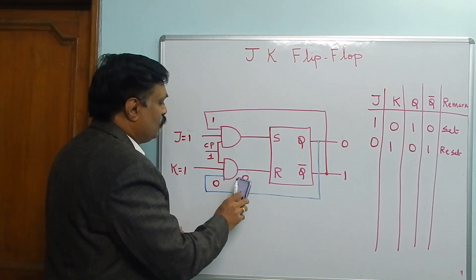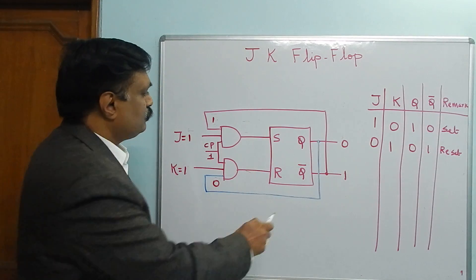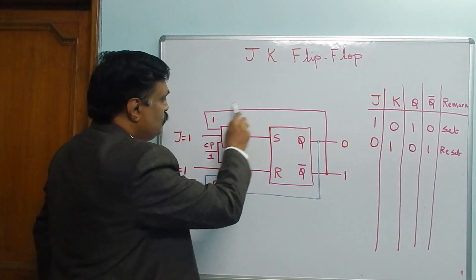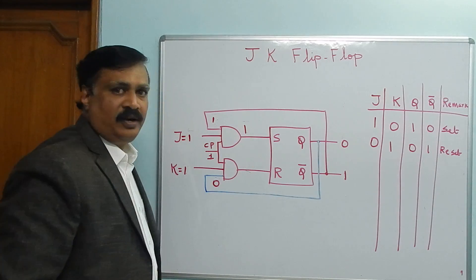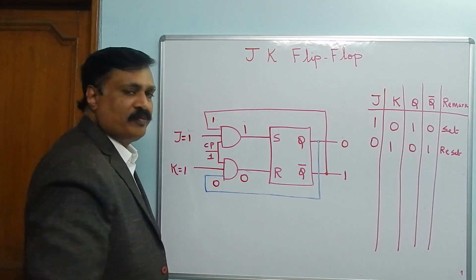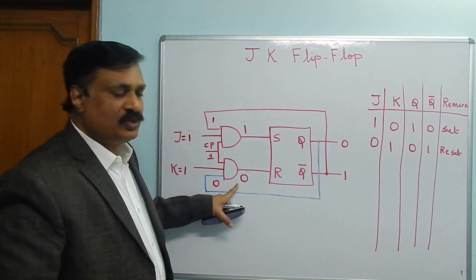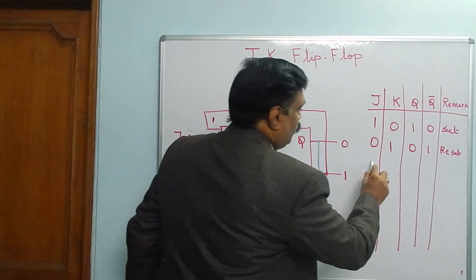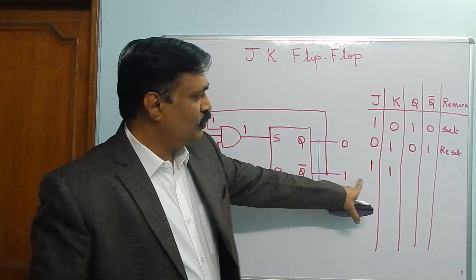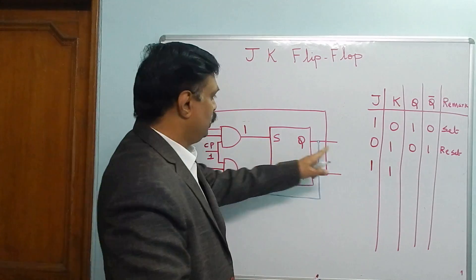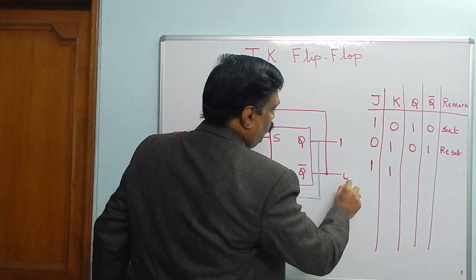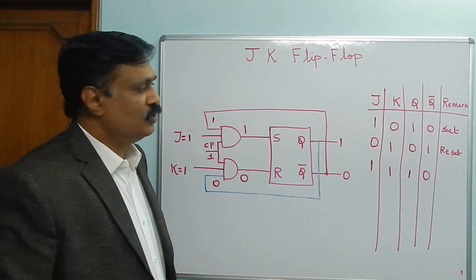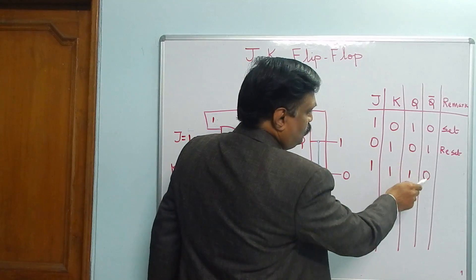Now the important case: J equal to 1, K equal to 1. Before giving 1,1, the output is Q equal to 0 and Q-bar equal to 1. The first AND gate receives J equal to 1 and Q-bar equal to 1, so it produces 1. The second AND gate receives K equal to 1 and Q equal to 0, so it produces 0. This gives S equal to 1, R equal to 0 — a set input for SR flip-flop. Therefore Q becomes 1 and Q-bar becomes 0. The output has toggled — it changes from 0 to 1.